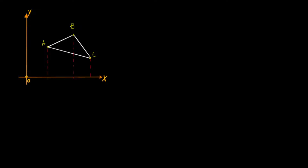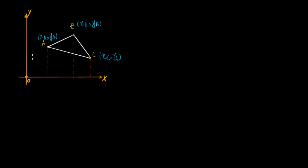So let me write it down here. Say we have a triangle drawn in white — triangle ABC — and A has the coordinates x_A, y_A; B would have the coordinates x_B, y_B; and C would have x_C, y_C. With that information given, we want to ask ourselves: what is the area of triangle ABC?